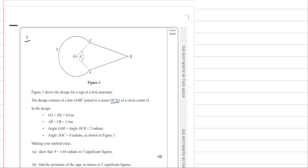In the design, OA is equal to OC and is 0.6 meters. AB is equal to CB, and they are 1.4 meters. Angle OAB is equal to angle OCB and is 2 radians.